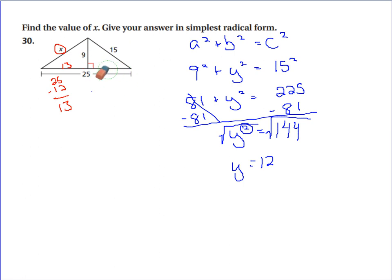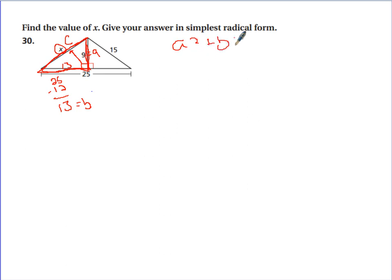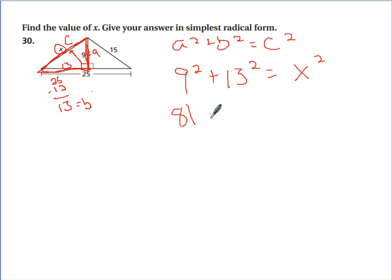Now I can figure out what X is. This is the right angle, so X is the C side. The 13 can be the B side and the 9 can be the A side — we're just looking at this triangle over here. A squared plus B squared equals C squared: 9 squared plus 13 squared equals X squared. 9 squared is 81, and 13 squared is 169.